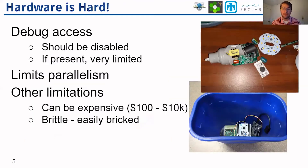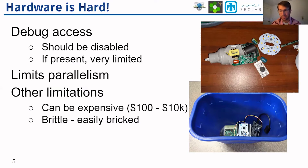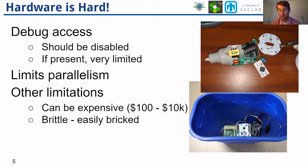If we want to assess bare metal firmware, the options we currently have are to look at hardware. We can tear apart the hardware to get debug access and do dynamic analysis using a debugger. However, for security reasons, this should be disabled, and if present it's very limited — maybe a handful of breakpoints. The dependency on hardware also limits parallelism; we can only run as many instances as physical devices we have. Other limitations are the cost, which can be hundreds to tens of thousands of dollars per device, and they're brittle.